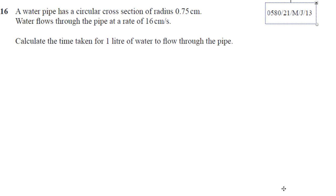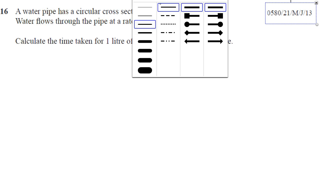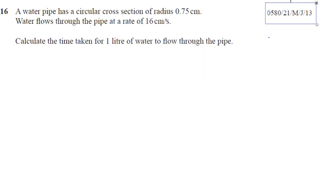Question number 16, May June 2013 paper 2 variant 1. We're told about a water pipe which has a circular cross-section with a radius of 0.75 cm. Water flows through the pipe at a rate of 16 centimeters per second. Calculate the time taken for one liter of water to flow through the pipe.